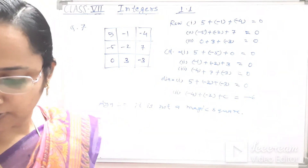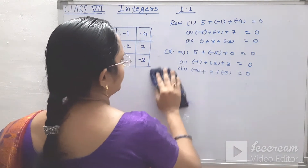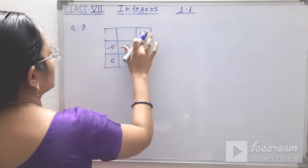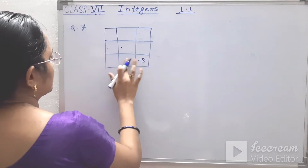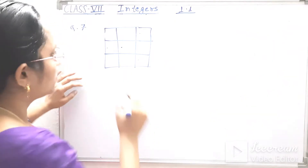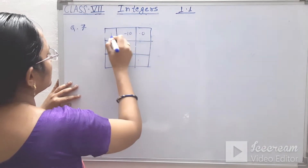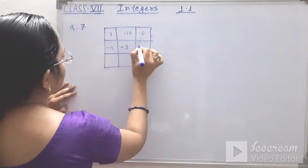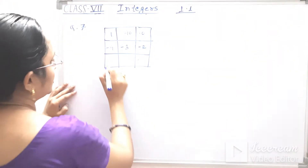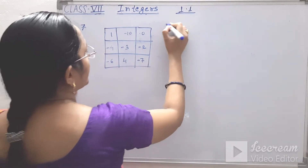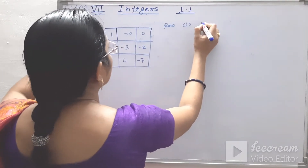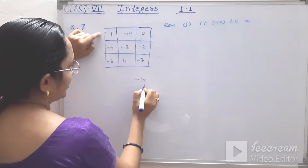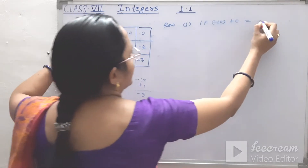Next, we see the second magic square. In the second magic square: 1, minus 10, 0 in row 1; minus 4, minus 3, minus 2 in row 2; minus 6, 4, and minus 7 in row 3. First row: 1 plus minus 10 plus 0 equals minus 9.